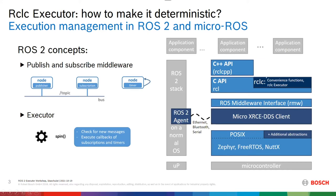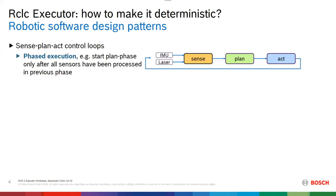We have implemented a couple of convenience functions and the so-called RCLC executor. As we have seen in the previous talks in this workshop focusing on ROS2 implementation, I would like to focus more on the application level and think about what are typical patterns in robotics that need to meet real-time requirements.